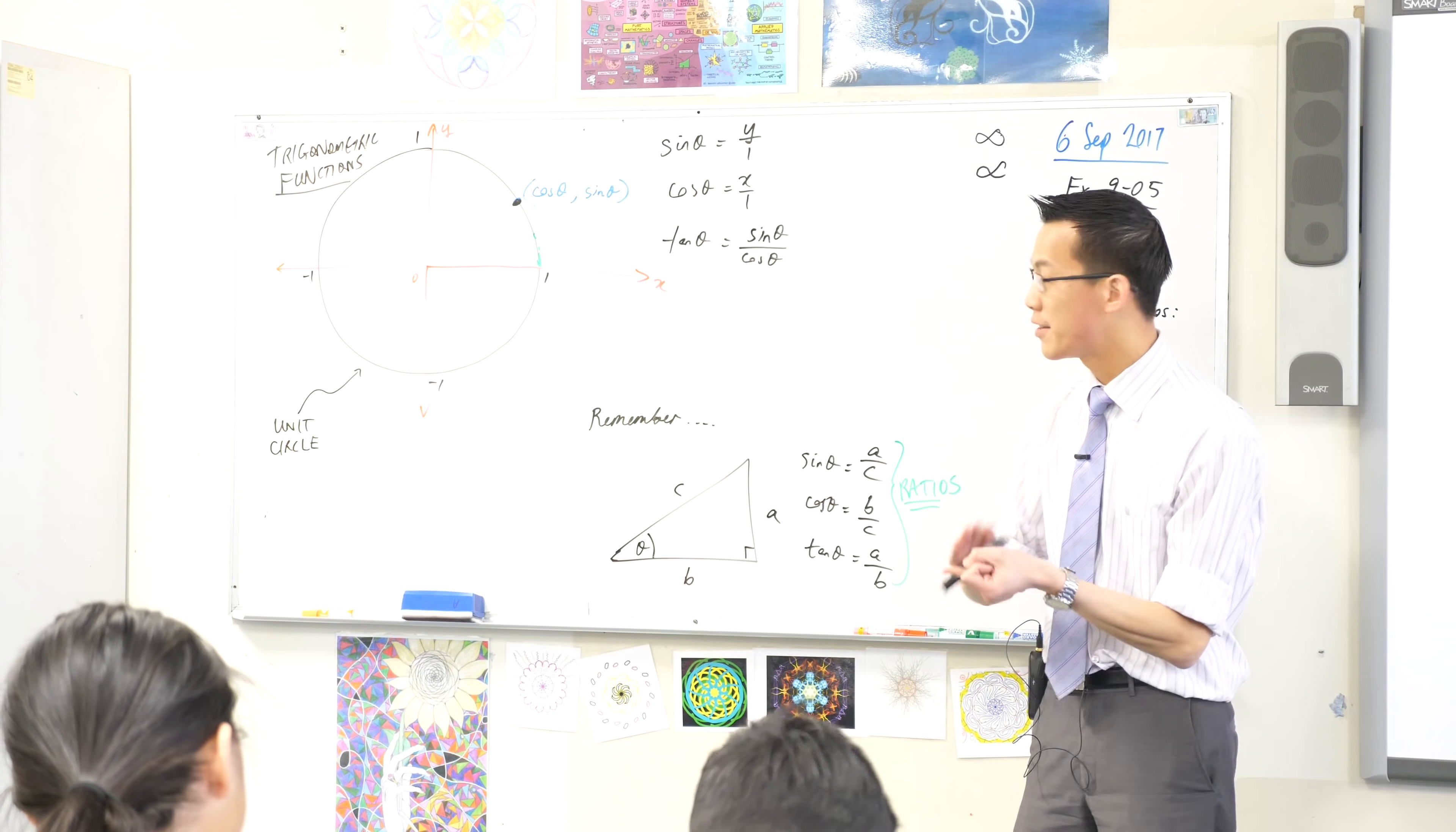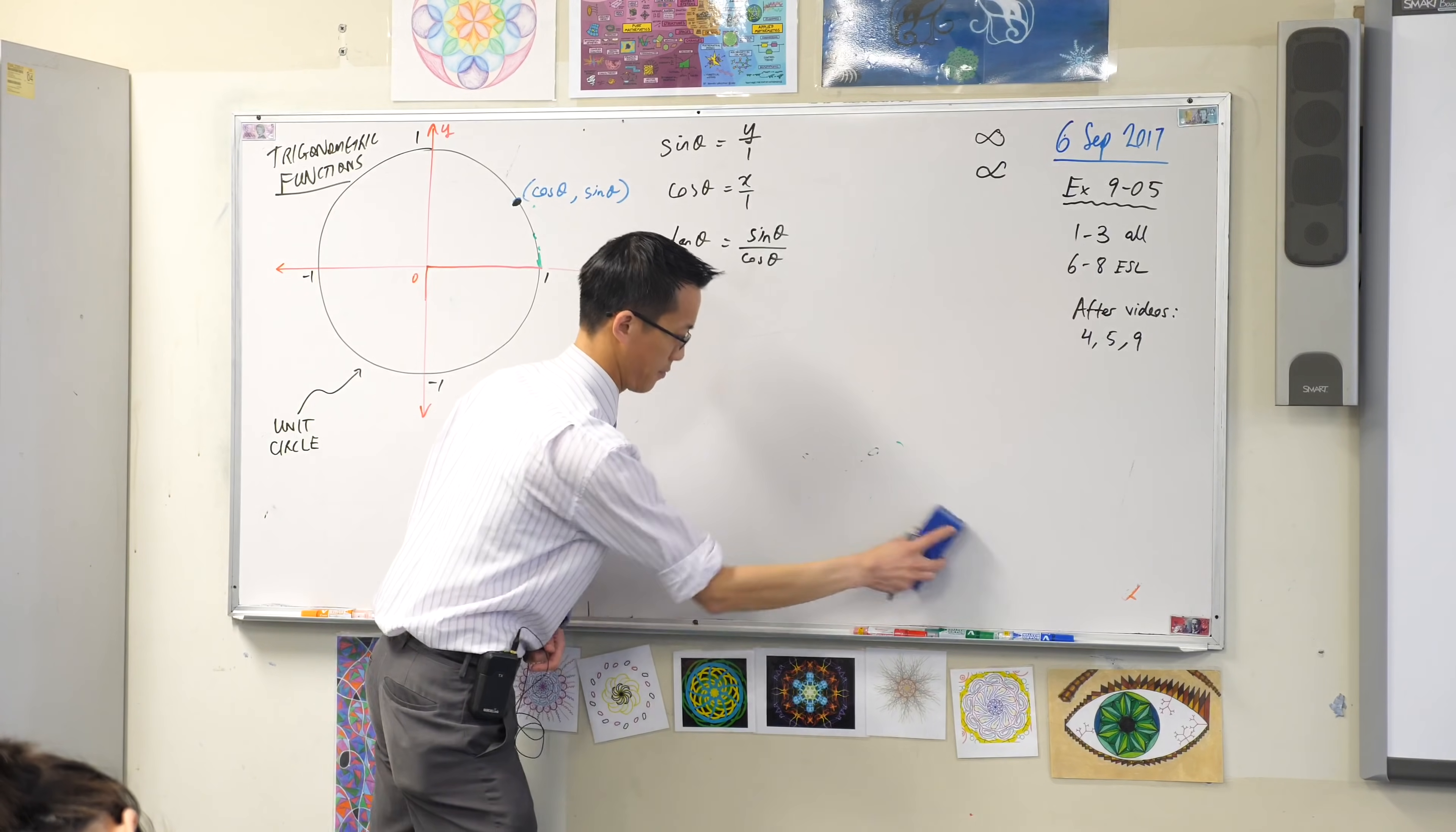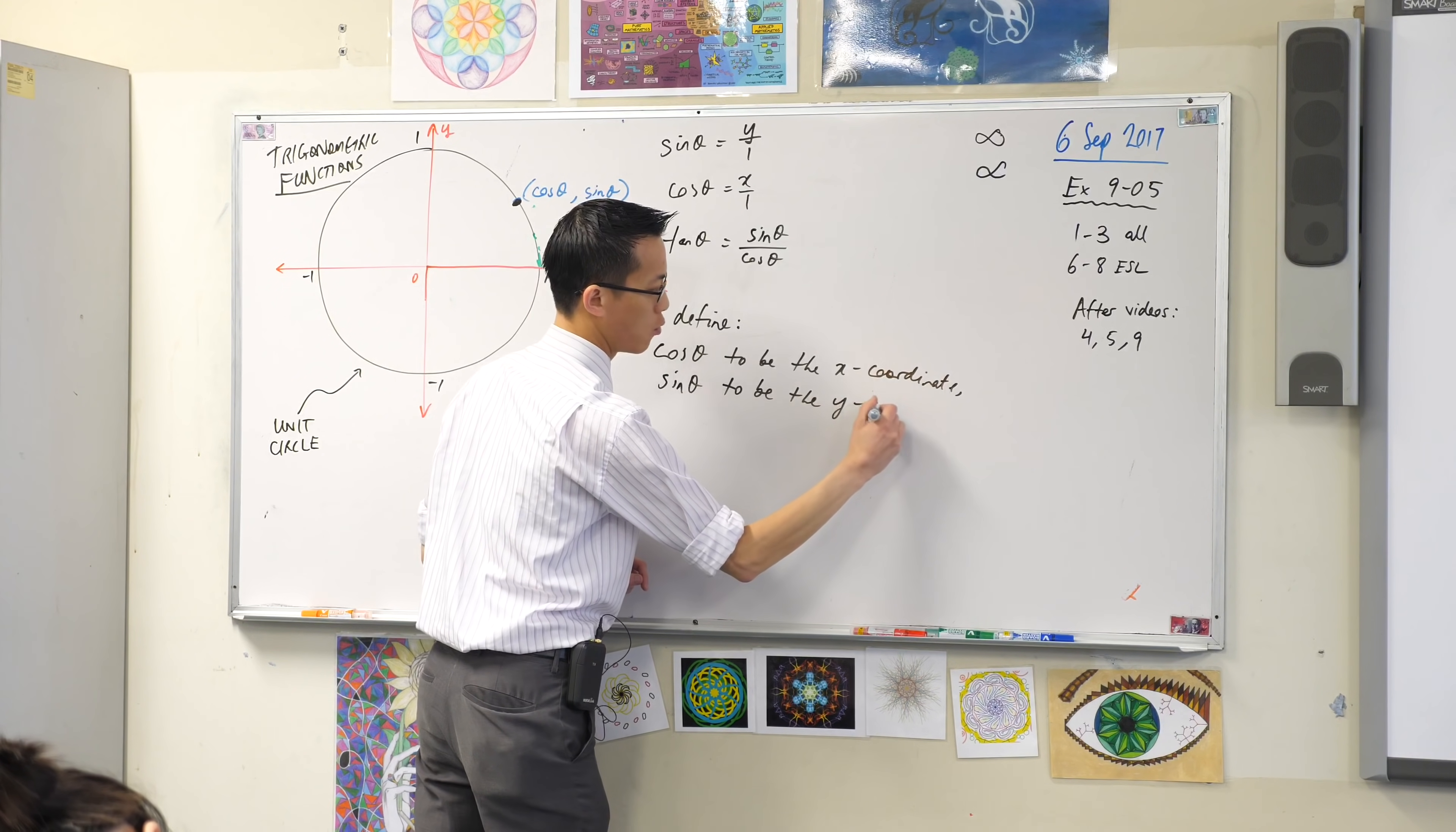We define cos θ. I'm doing this in alphabetical order because it tends to be easier to remember. However, we define cos θ as the x-coordinate and sin θ as the y-coordinate. Let me write that down so you can write it with me.